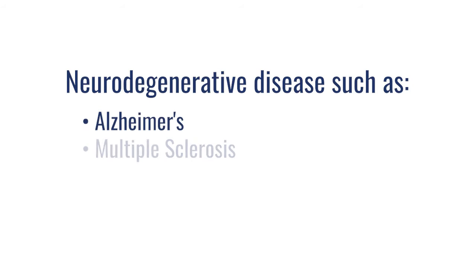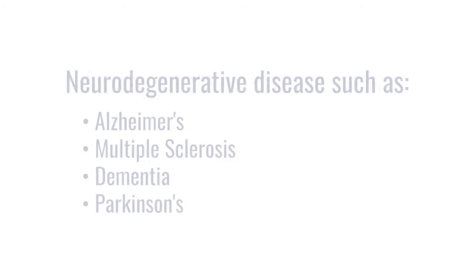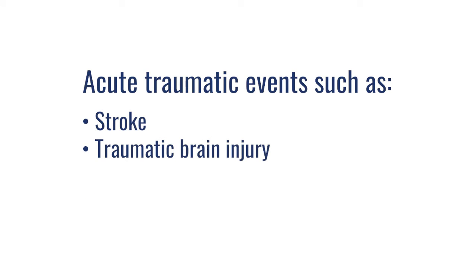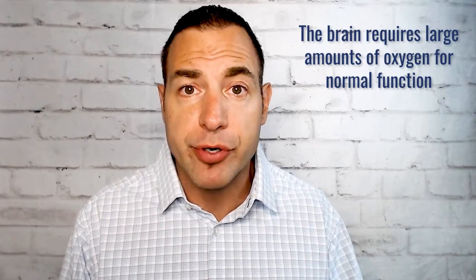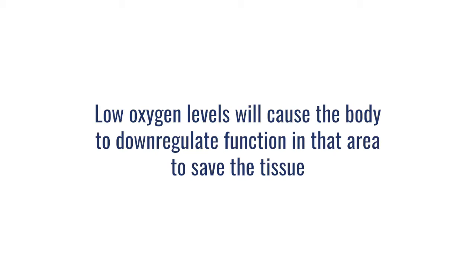Whether we're talking about chronic illness like neurodegenerative disease — Alzheimer's, MS, dementia, Parkinson's — or acute traumatic events like stroke, TBI, and concussion, one of the underlying themes is hypoxia, a low oxygen environment. Because the brain is so metabolically active, it requires a tremendous amount of oxygen to produce the energy required for normal function. Anytime there's lower than normal oxygen available — relative hypoxia — the body can go into a state of dormancy. When there's a shift in oxygen levels going to the brain, the body will automatically start to downregulate function in that area, primarily to save the tissue.